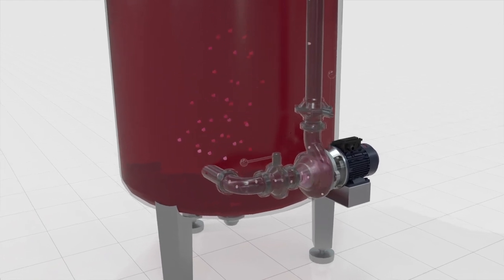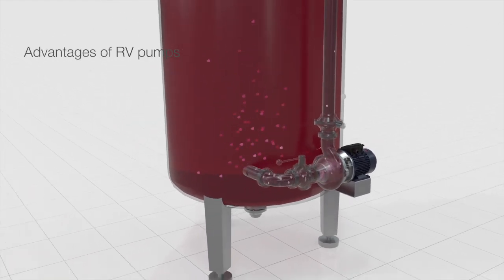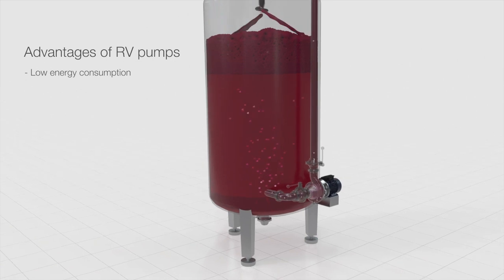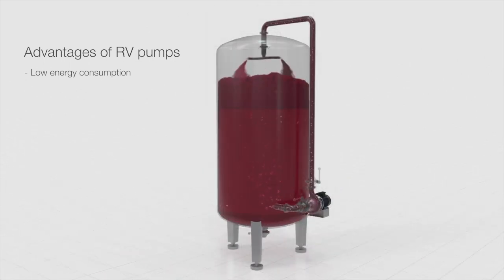Advantages of RV pumps are low energy consumption thanks to their high performance, less than 70%. This means a lower increase in the temperature of the pumped wine. Minimal damage to solids, skins, seeds, pulp. The helicoidal impeller and the precise internal clearances guarantee minimum recirculation inside the pump, and let solids through without damaging their structure.